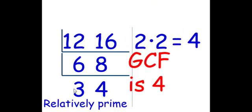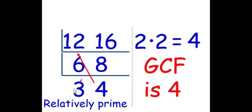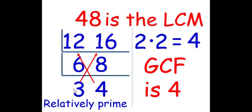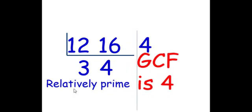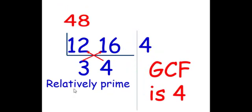3 and 4 are relatively prime. 2 times 2 gives us our GCF of 4. 4 times 12 and 3 times 16 gives us our LCM of 48. Another way would be to factor out a 4. 12 divided by 4 is 3. 16 divided by 4 is 4. We have our two relatively prime numbers. Our GCF is 4 and our LCM is 48.